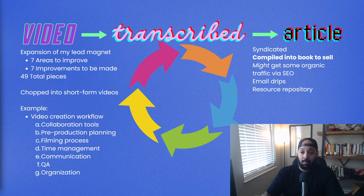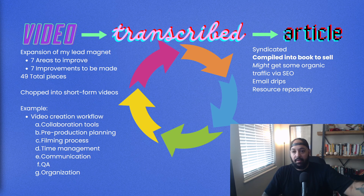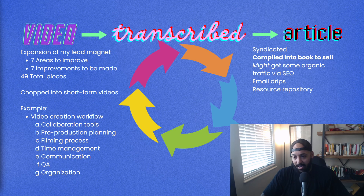For example — it's not video creation or anything like that, but I just wanted to drum up some kind of example. Here's one area: video creation workflow. Within that video creation workflow, here are seven things you can do to improve it: collaboration tools, different tools you can use, pre-production planning, filming process, time management, communications, quality assurance, and organization. Just make a video about all those things.